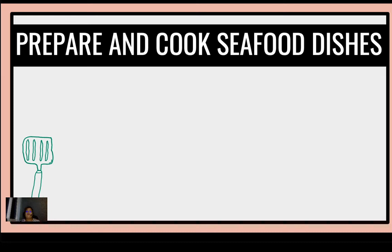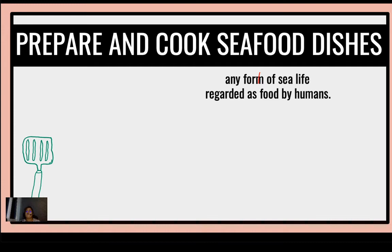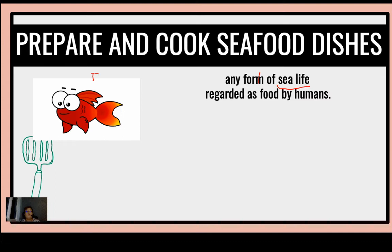Let's talk about how to prepare and cook seafood dishes. When we talk about seafood, this is any form of sea life found in the ocean regarded as food by humans. It can be classified into two: number one, we have the fish, and number two, we have the shellfish.